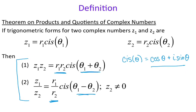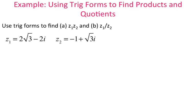Let's go ahead and do an example. Use trig forms to find the product and the quotient — part a is the product, part b is the quotient. In order to do that, you need to know two things for each complex number: r and theta. So let's start by finding r, and call this r1.